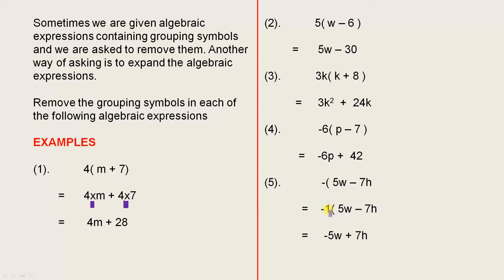And when you have a minus sign outside of the grouping symbols with nothing near it, that's minus 1. So that's why I've rewritten that, because that is actually minus 1. So that gives us minus 5w plus 7h. That's the answer there.